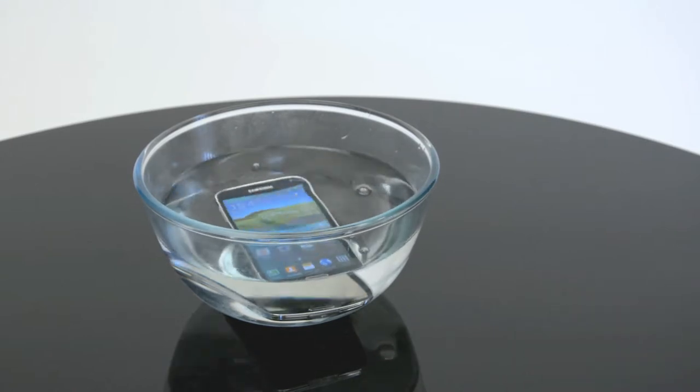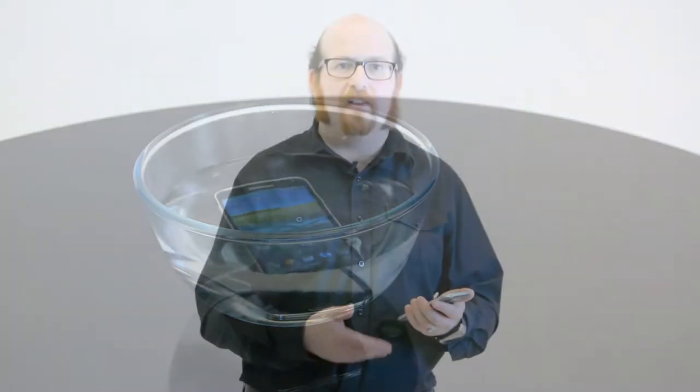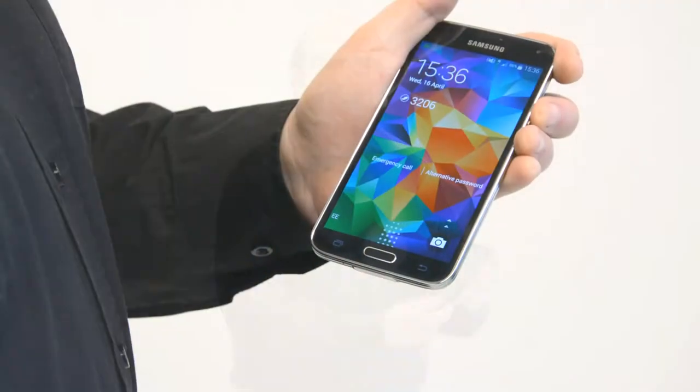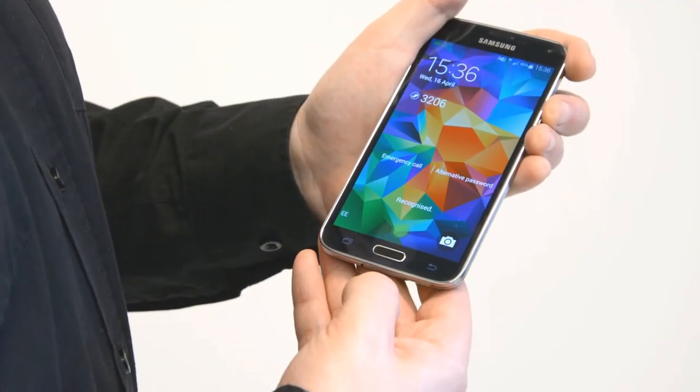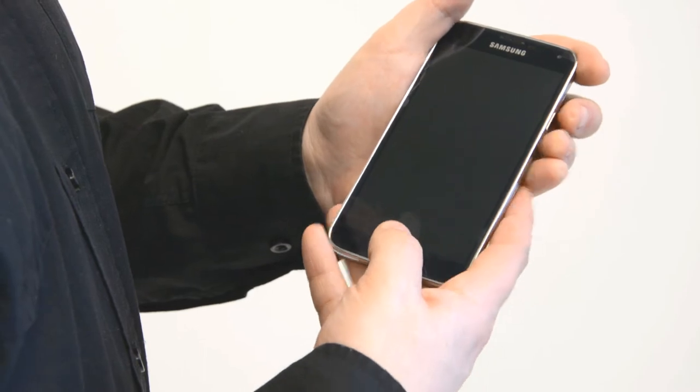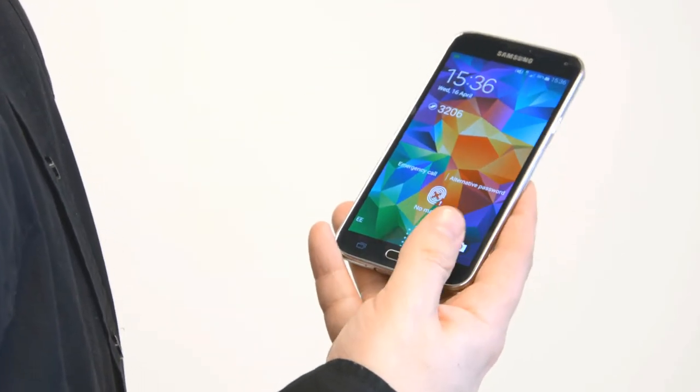Another less visible but perhaps useful change is that taking a leaf out of Apple's book the S5 now includes a fingerprint reader built into the home button so you can wake it up by simply dragging your thumb across. It's got to be said though it's quite awkward to use one-handed.